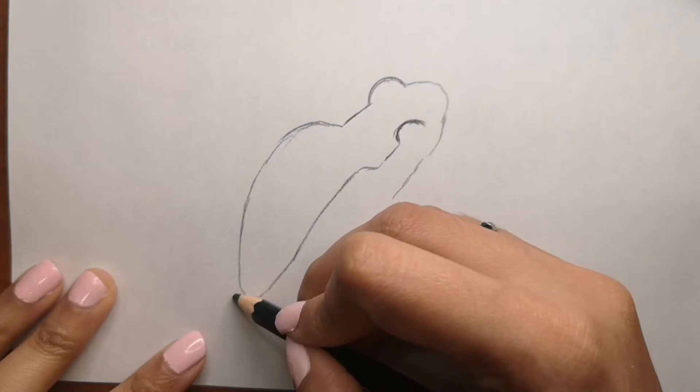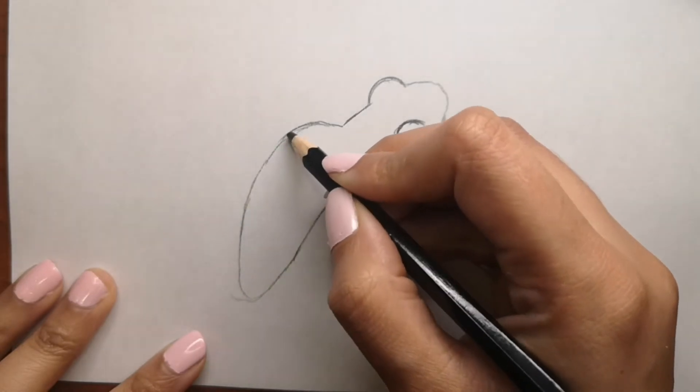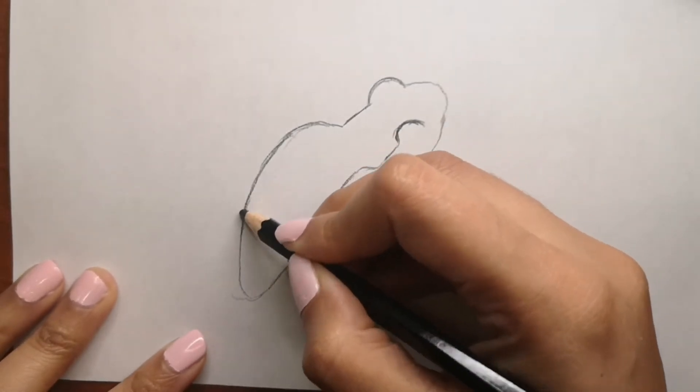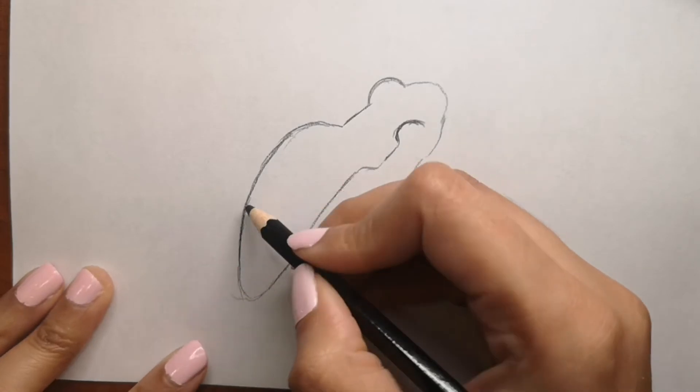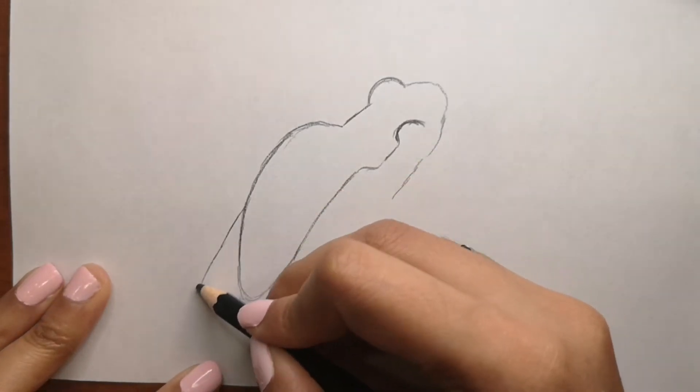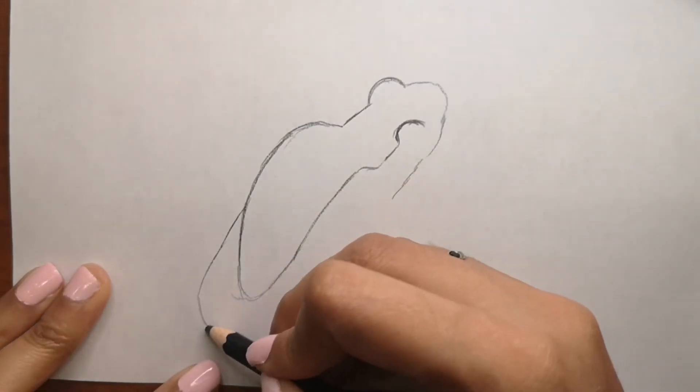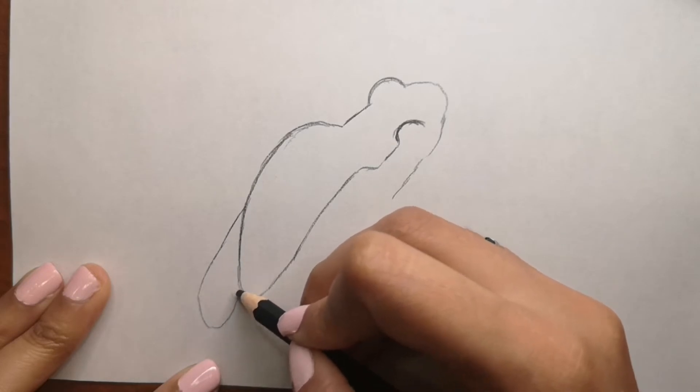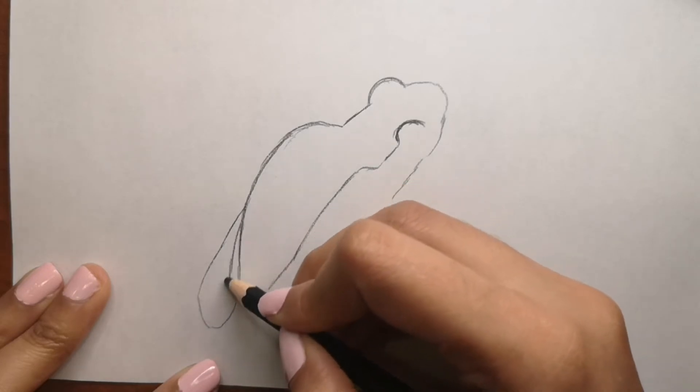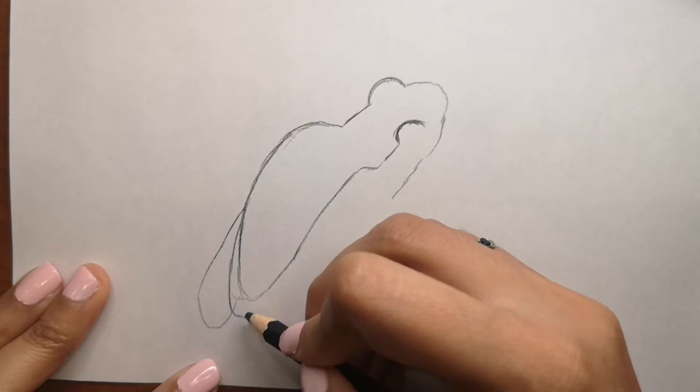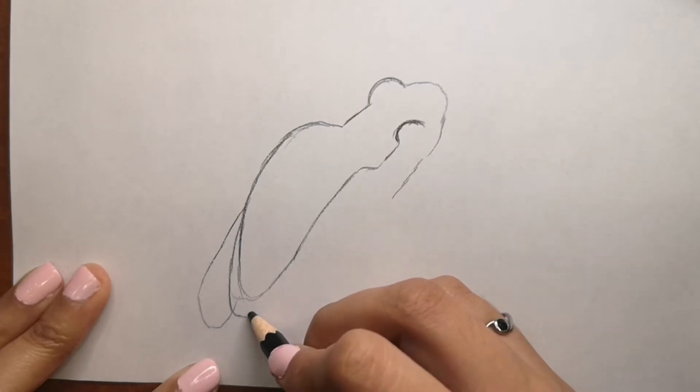You can draw frogs in so many different ways. There are different kinds of frogs as well. If you want me to draw other types of frogs, let me know in the comments below. You can draw them in different directions and they all look very different.